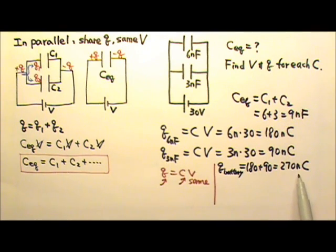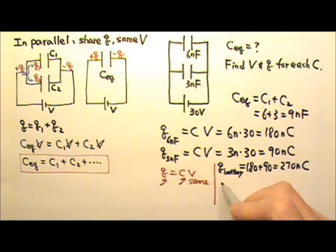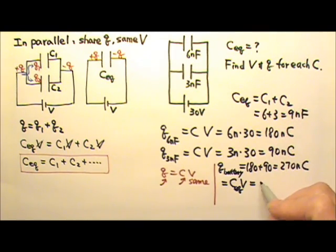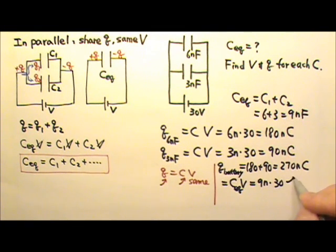And this charge is also the charge on the equivalent capacitor. Which means that this is also the CV, the equivalent capacitance times the voltage. The equivalent capacitance is 9nF times the voltage, 30 volts. So this gives me the same thing, 270 nC.